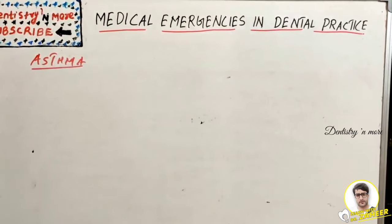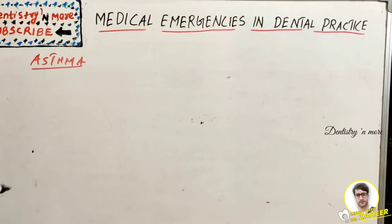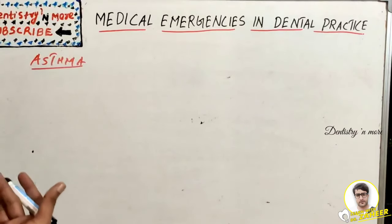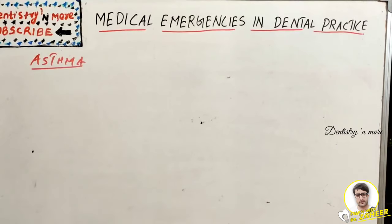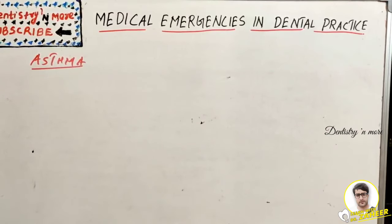Asthma is a clinical state of hyperreactivity of the tracheobronchial tree, characterized by recurrent paroxysms of dyspnea and wheezing. Management: recognize the symptoms, stop the dental procedure, position the patient upright or bending forward with arms straight ahead, and administer a bronchodilator. Most asthmatic patients carry a bronchodilator. If the attack terminates after bronchodilator use, dental treatment can resume. If not, declare status asthmaticus and call for emergency medical services.